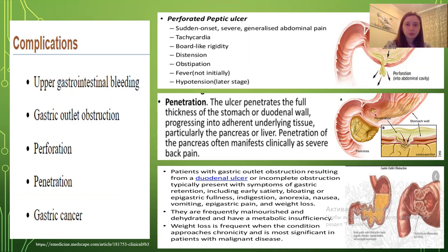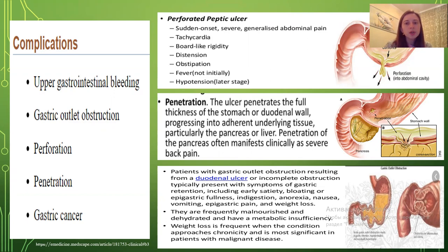Regarding perforated peptic ulcer: clinical features include sudden onset, severe generalized abdominal pain, tachycardia, board-like rigidity, distension, obstipation, fever, and hypotension. Penetration occurs when the ulcer penetrates the full thickness of the stomach or duodenal wall, progressing into underlying tissue, particularly the pancreas or liver. Penetration of the pancreas often manifests clinically as severe back pain.